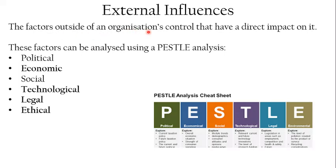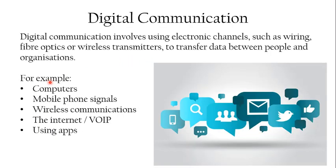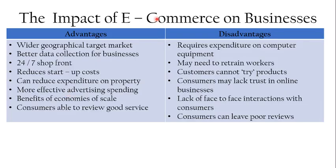External influences are the factors outside an organisation's control that have a direct impact on it. A-level students use a PESOL analysis; at GCSE you need to know about the four areas highlighted in bold. Digital communication is something that businesses use to communicate with customers and their own employees.